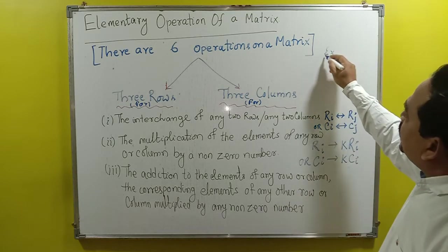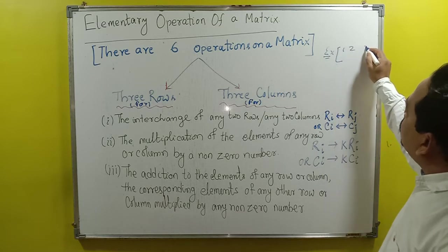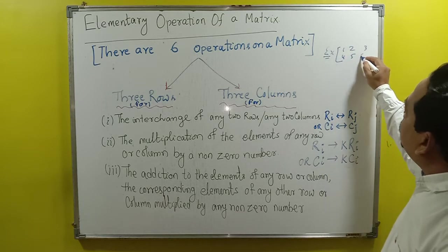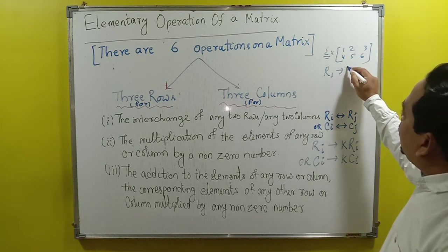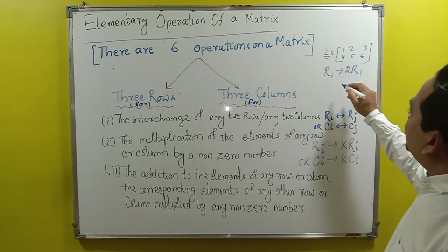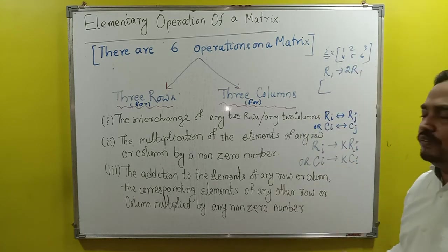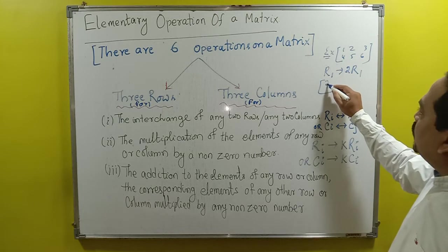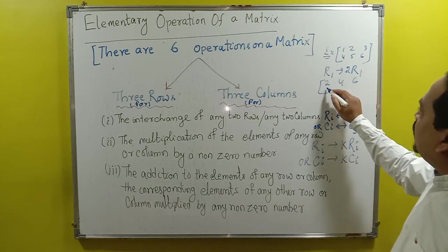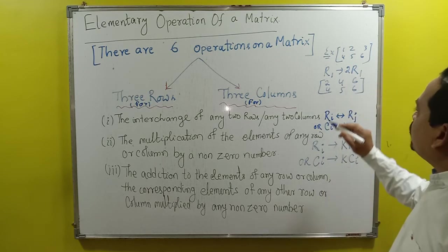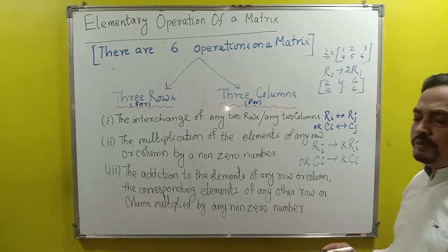For example, take the matrix [1, 2; 3, 4; 5, 6] and apply R1 → 2·R1. Then the 2 will be multiplied into R1: 2×1=2, 2×2=4, 2×3=6, and the second row remains 4, 5, 6. This is the matrix after the operation.